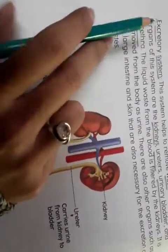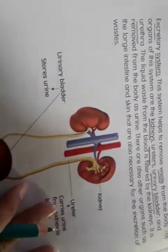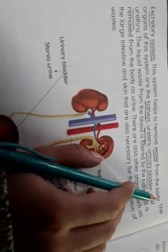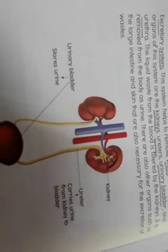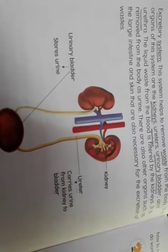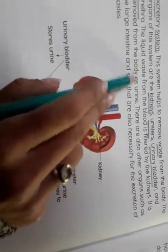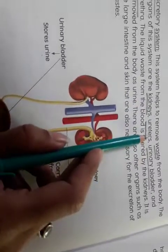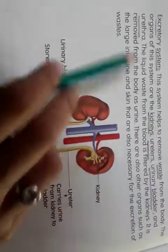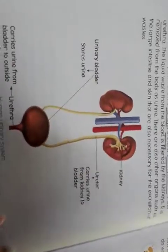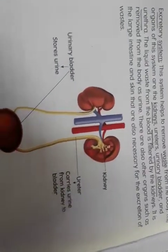The excretory system helps remove waste from the body. Whatever waste is inside our body, this system removes it. The organs of the excretory system are: kidneys, urinary tract, urinary bladder, and urethra.